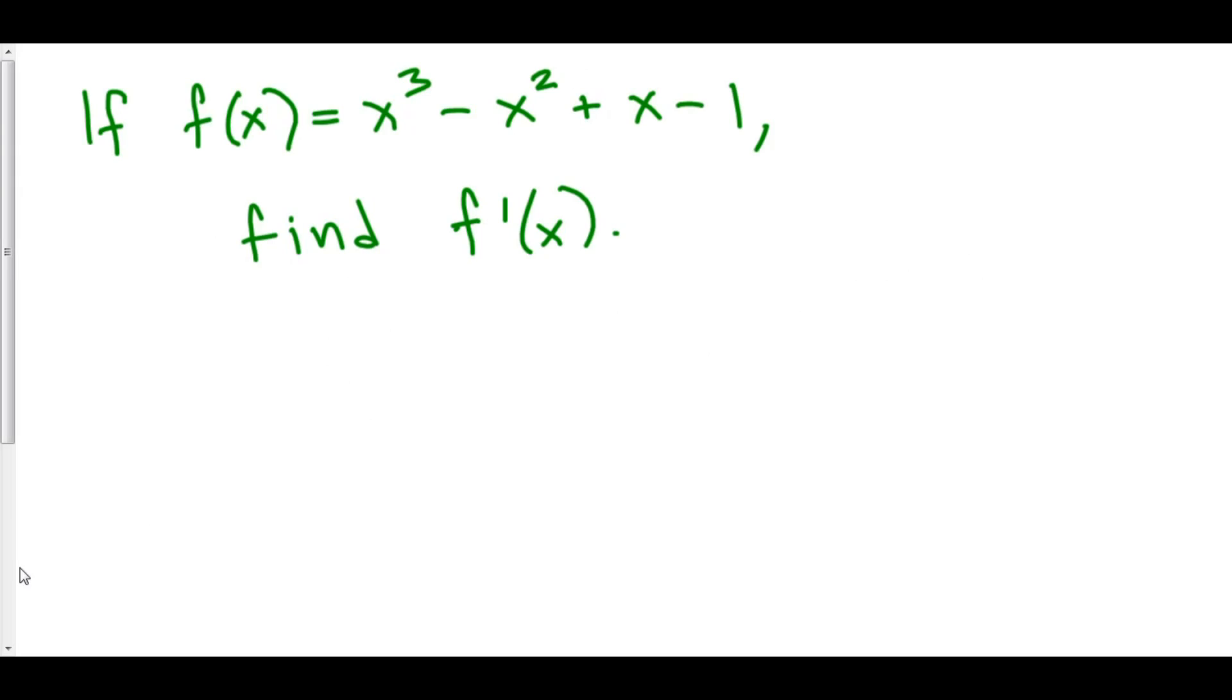Here's an example. If f of x is equal to x cubed minus x squared plus x minus 1, let's find the derivative of f. Now for this, we're also going to use some of our properties of derivatives, which say that if we add a bunch of functions together, we can just split them up.